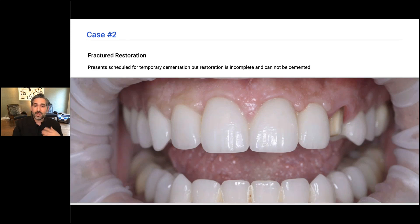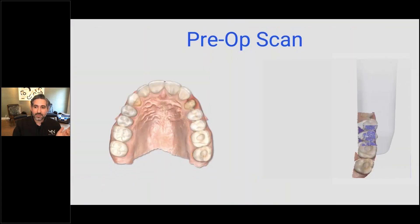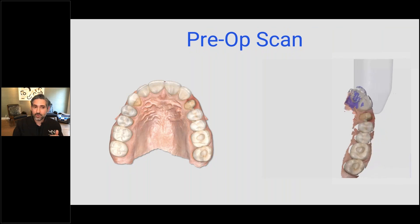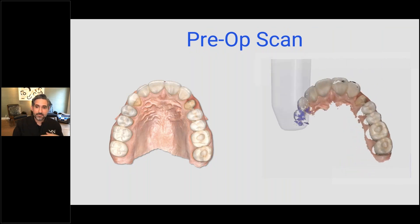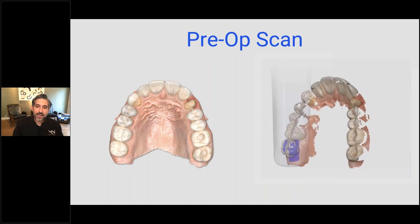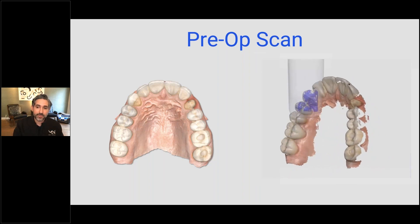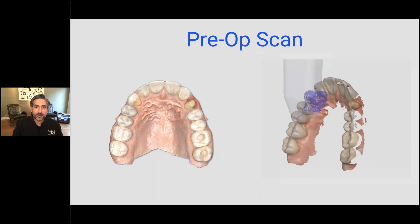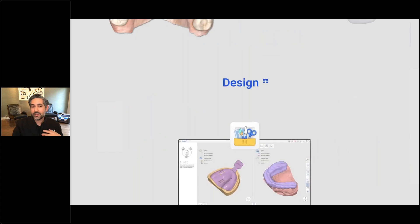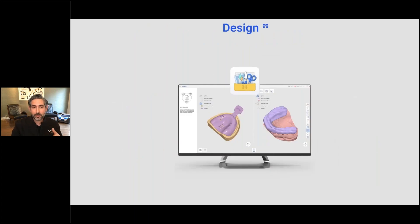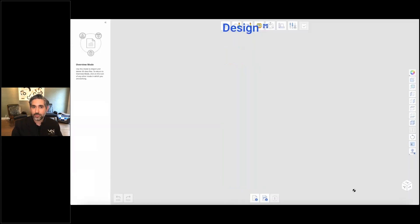After thinking about it for a second, I decided to clone the other side. I did a scan — that only takes one or two minutes. My assistants are getting really efficient with this. Then I said let's do the design during the appointment. While he was waiting after the scan, we put topical on and I went in to numb him. While that kicked in, I quickly did the design with the goal to have it ready before we started the procedure.